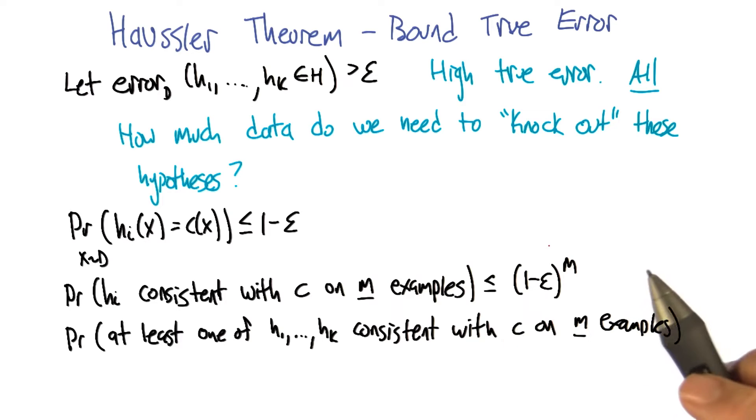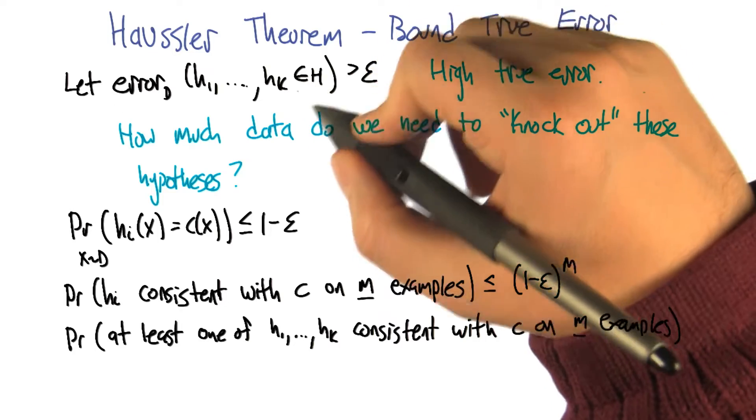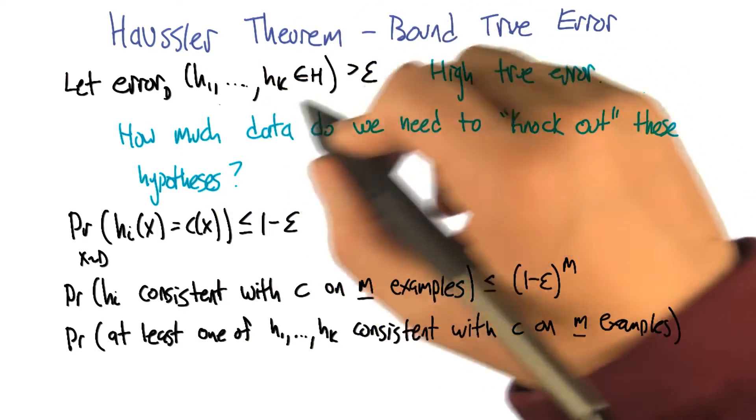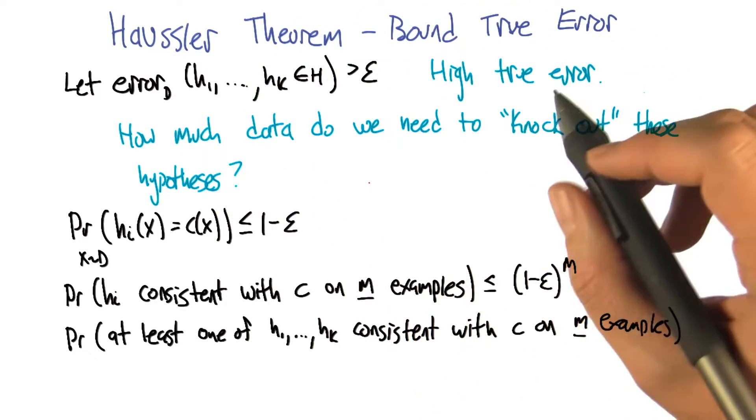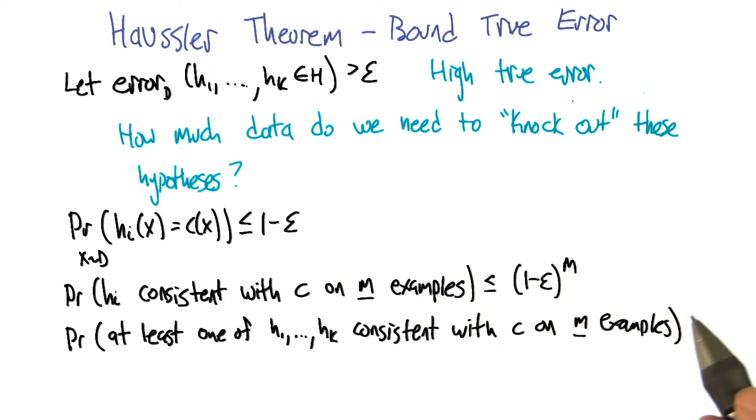So, Haussler is the name of a person in this particular case. And what he worked out is a way of bounding the true error as a function of the number of training examples that are drawn. Oh, nice. So, let's consider from the hypothesis set that we have, all the hypotheses can be categorized as to whether or not they have high true error or low true error.